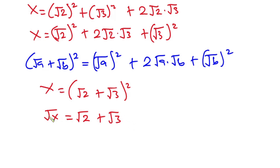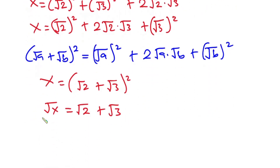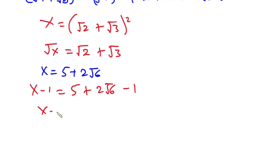We're done finding √x. Now let's find x minus 1. We know x = 5 + 2√6, so x minus 1 = 5 + 2√6 minus 1, which gives us x minus 1 = 4 + 2√6.